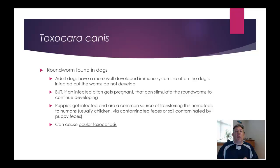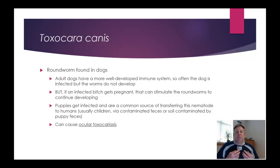Another very common roundworm infection is Toxocara canis — and there's also Toxocara cati for cats. This is for dogs and cats, a very common infection. An infected adult dog will often have these, but they won't develop fully — they'll be stuck in the juvenile stage, perhaps because the adult immune system is stronger. But if an infected female dog gets pregnant, this seems to stimulate them to begin developing again, so her puppies can get infected. It can also be transmitted through her milk.